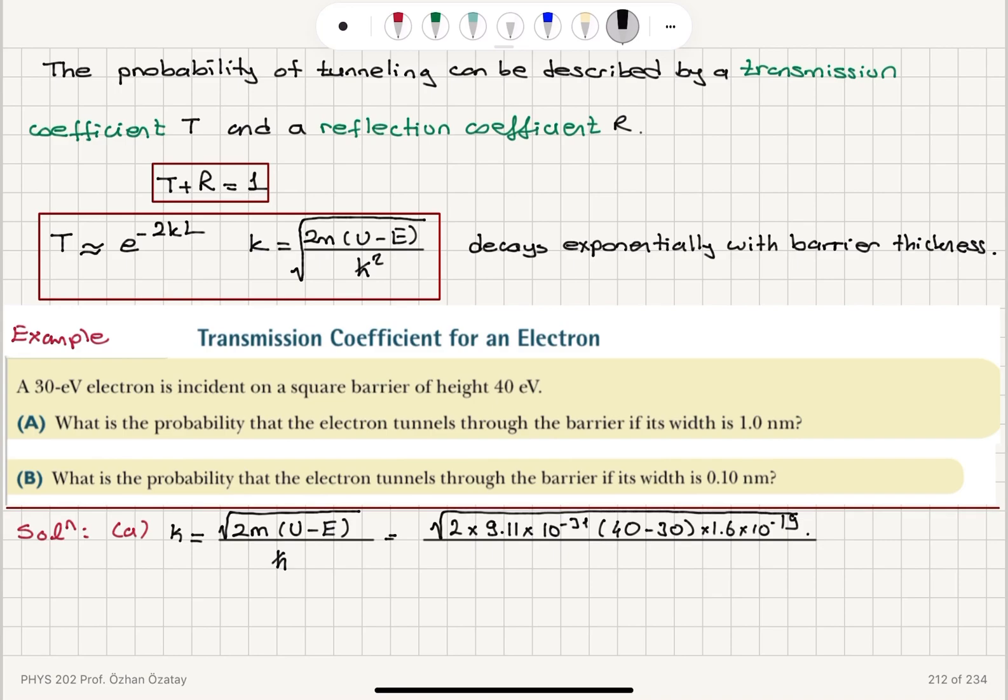This is multiplied by 2 pi divided by h, Planck's constant, 6.626 times 10 to the minus 34 joule seconds. So this gives us 1.619 times 10 to the 10 per meter.